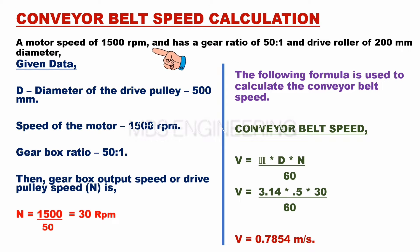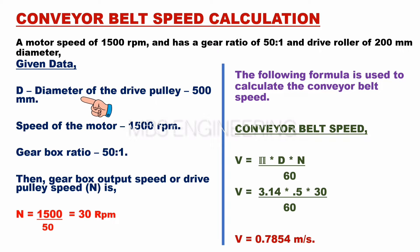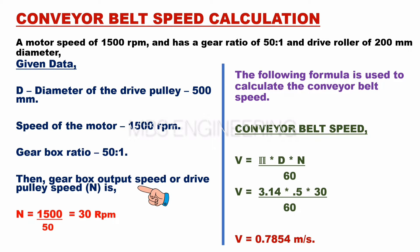Given the following data: diameter of the drive pulley D equals 500 millimeters, motor speed equals 1500 revolutions per minute, and gearbox ratio equals 50 to 1. We can calculate the gearbox output speed, or drive pulley speed N, as follows: N equals 1500 divided by 50, so N equals 30 revolutions per minute. The gearbox output or drive pulley speed N is 30 revolutions per minute. Now we can use the conveyor belt speed formula to determine the conveyor belt speed.